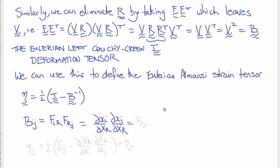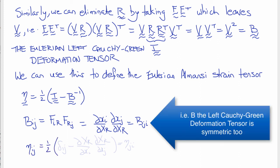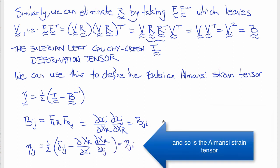And notice that this expression is also symmetric in i and j. So B_ij equals B_ji. And this time, the indices refer to the current or deformed coordinates. Writing out the strain tensor in index notation, we get that eta_ij is one-half, delta_ij minus del Xr del xi del Xr del xj, which is also symmetric.